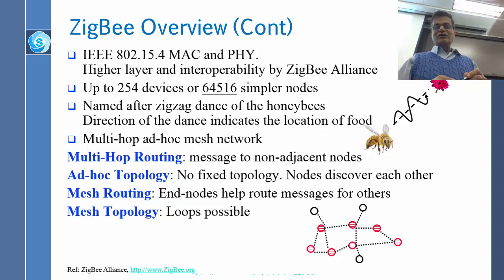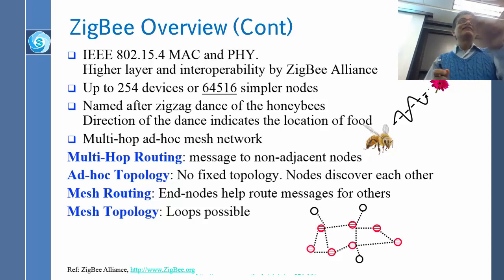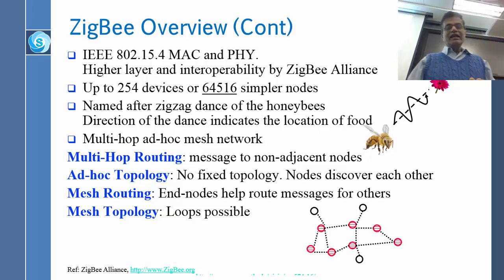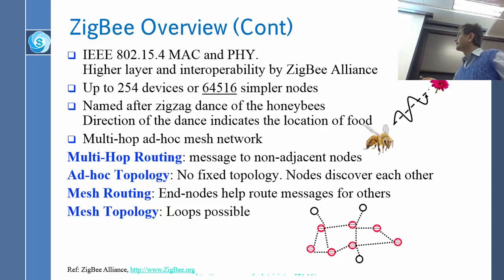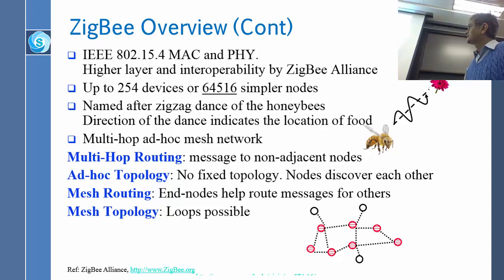The direction of the honeybee's dance indicates the location of food — a bee won't go straight but zigzags. That is what Zigbee is. Zigbee supports multi-hop ad-hoc mesh networks. 'Ad-hoc' means peer-to-peer with no access point. 'Multi-hop' means messages are sent through other nodes. 'Ad-hoc' means no fixed topology — nodes discover each other. 'Mesh' means there are cycles, and loops are possible.